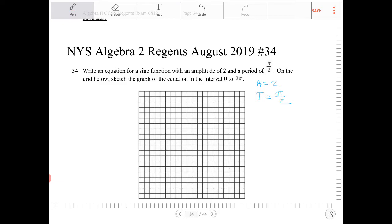So we need to know the conversion from period to frequency, and the conversion is this. The period is equal to 2 pi over f.